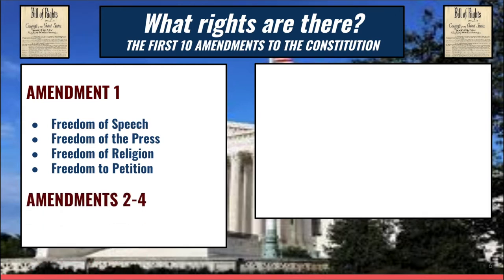Amendments 2 through 4 have to do with your personal rights and protections for citizens. For example, the Second Amendment is the right to bear arms. The Fourth Amendment protects you from unlawful searches and seizures by the government — the police cannot enter your home unless they have a duly authorized warrant from a court or they have probable cause.